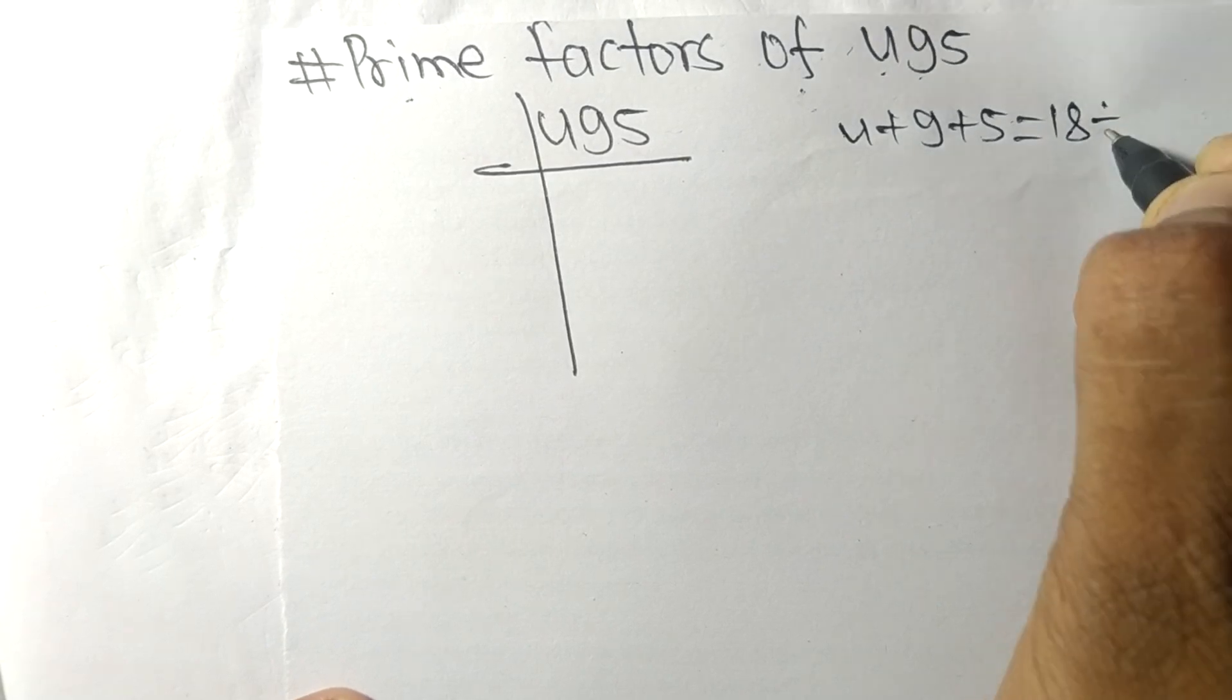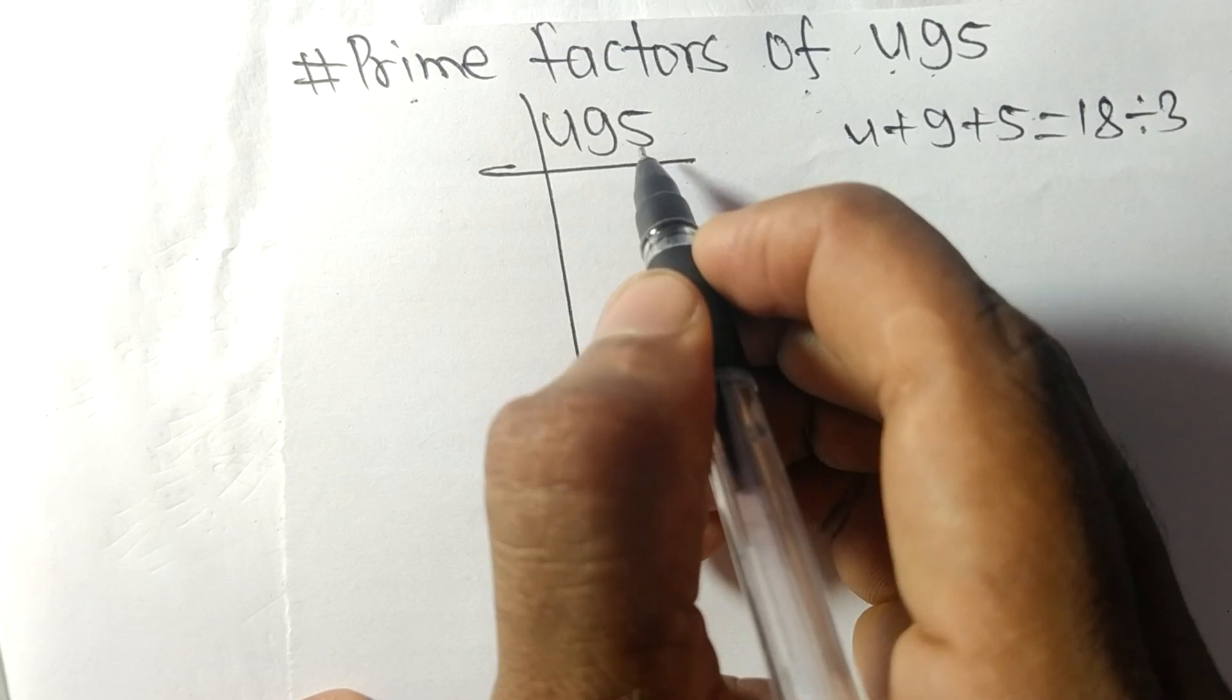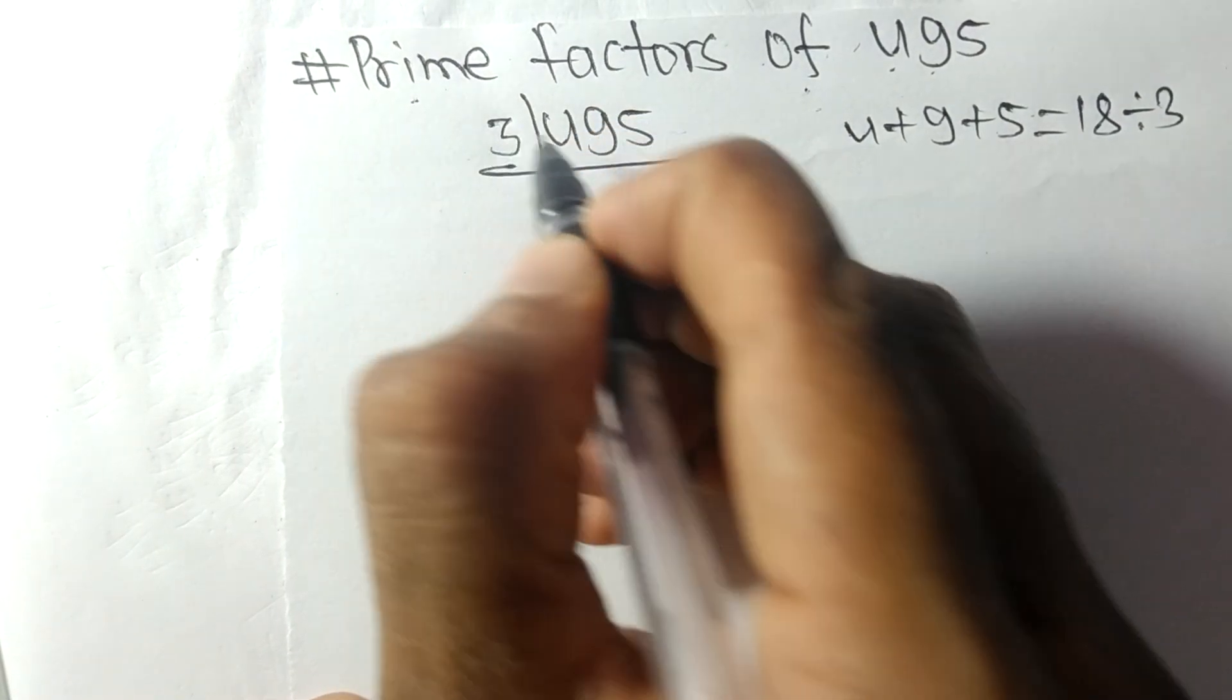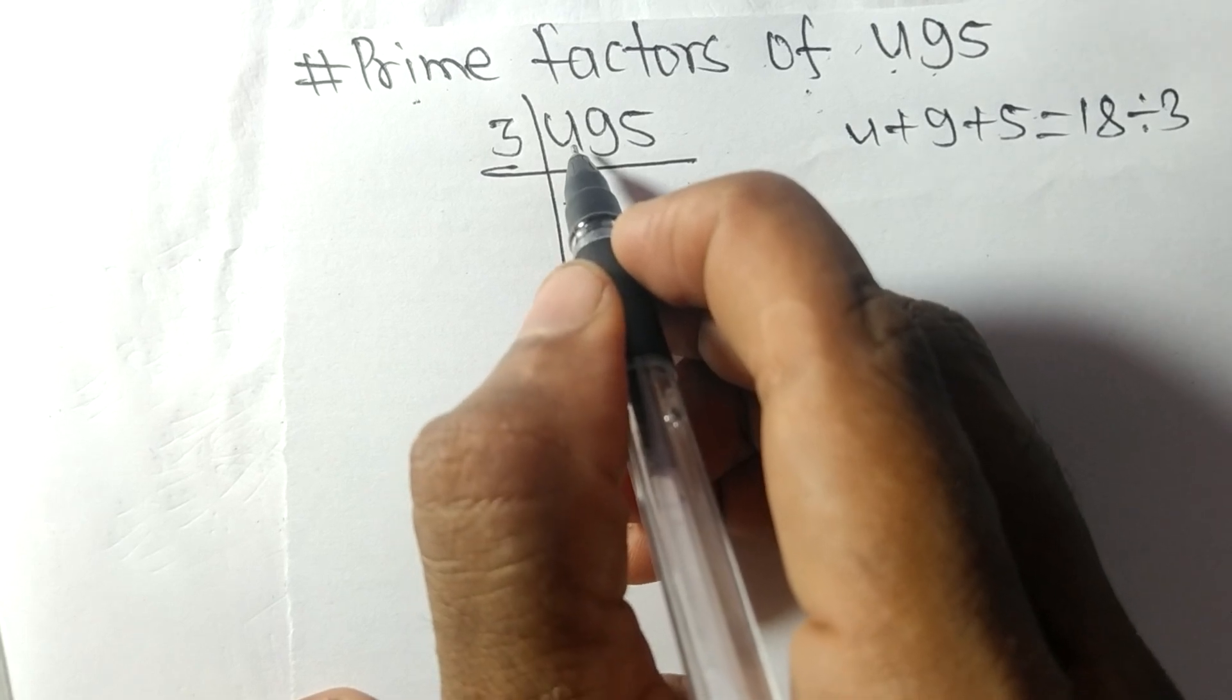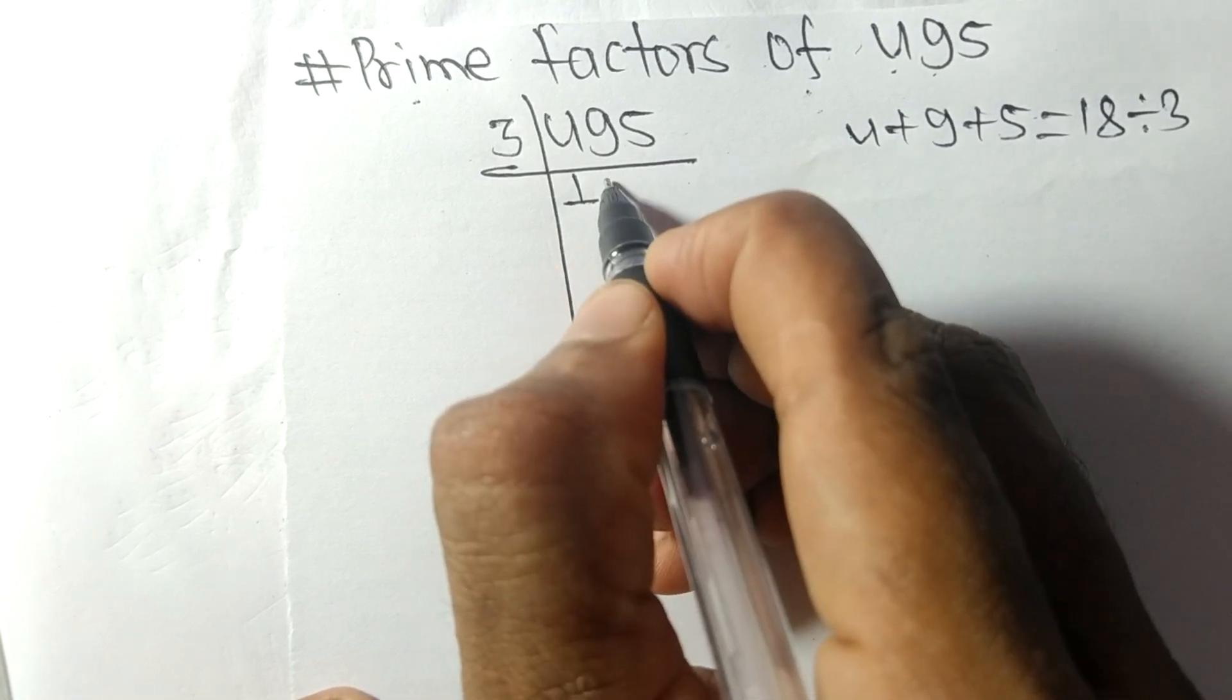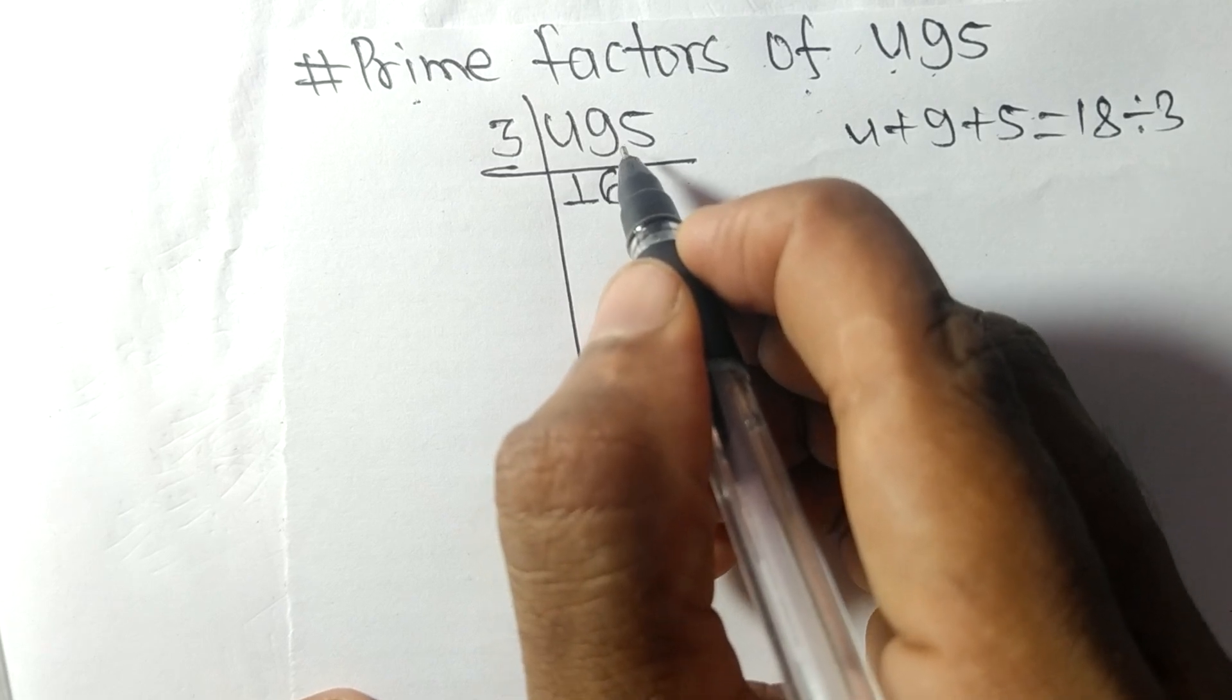is exactly divisible by 3, so 495 is also divisible by 3. 3 times 1 equals 3 remainder 1. 19. 3 times 6 equals 18 remainder 1.